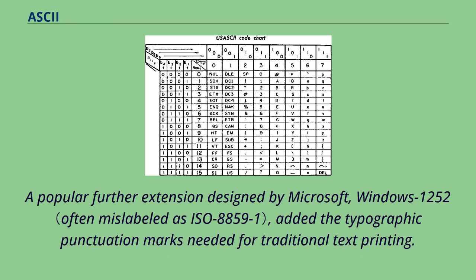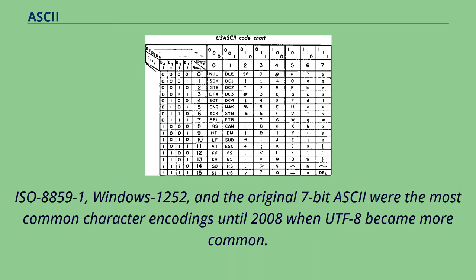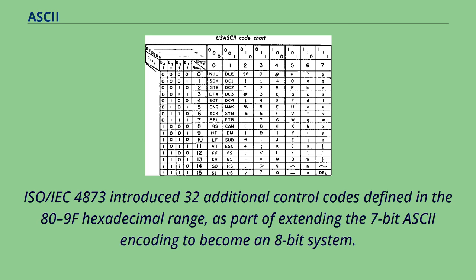A popular further extension designed by Microsoft, Windows 1252, added the typographic punctuation marks needed for traditional text printing. ISO 8859-1, Windows 1252, and the original 7-bit ASCII were the most common character encodings until 2008 when UTF-8 became more common. ISO/IEC 4873 introduced 32 additional control codes defined in the 80-9F hexadecimal range, as part of extending the 7-bit ASCII encoding to become an 8-bit system.